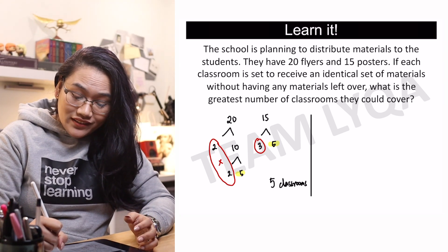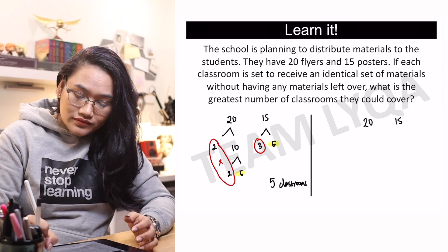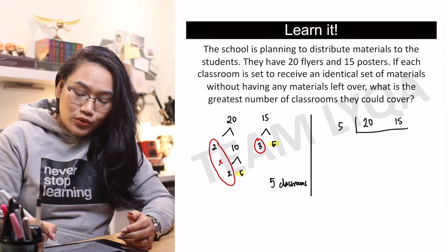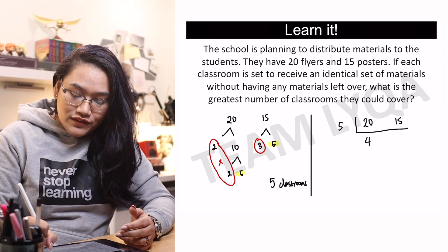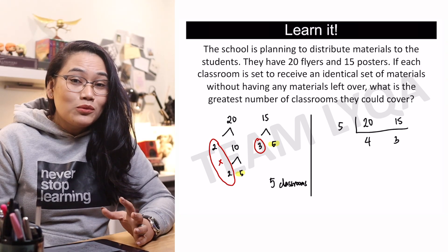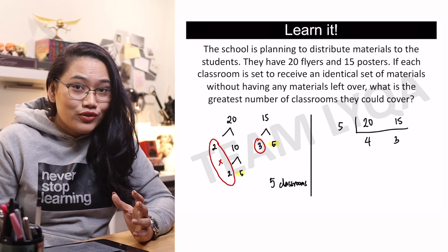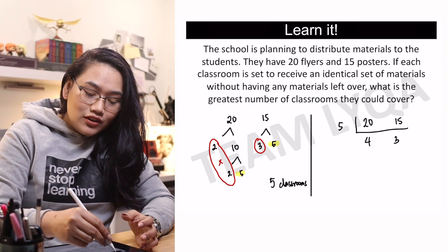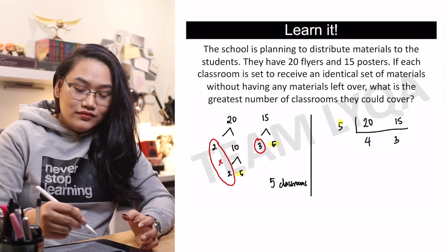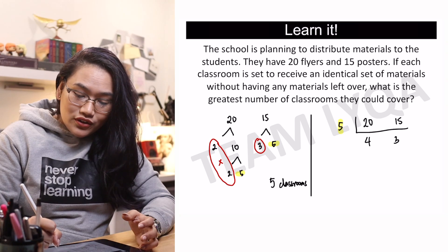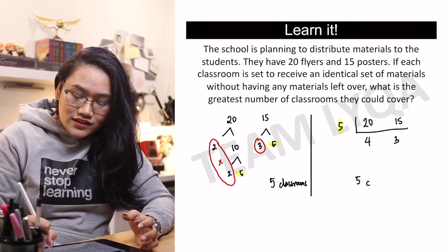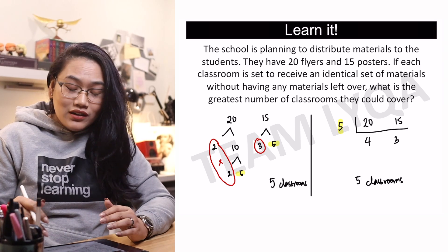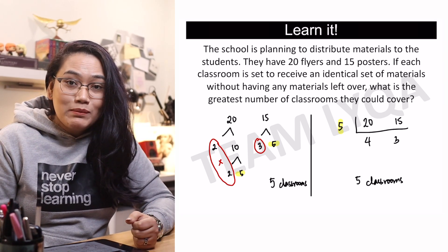Kung ladder method naman, 20 at 15. Pareho silang divisible sa 5. 20 divided by 5 is 4. 15 divided by 5 is 3. Again, kung masyado itong mabilis para sa inyo, may video lesson tayo — panoorin ninyo na lang yun. At dahil 5 lang ang number na nasa gilid, yun na rin yung sagot: 5 classrooms. Kung ano man ang paraan na ginamitin ninyo, ang importante, pareho ang sagot.